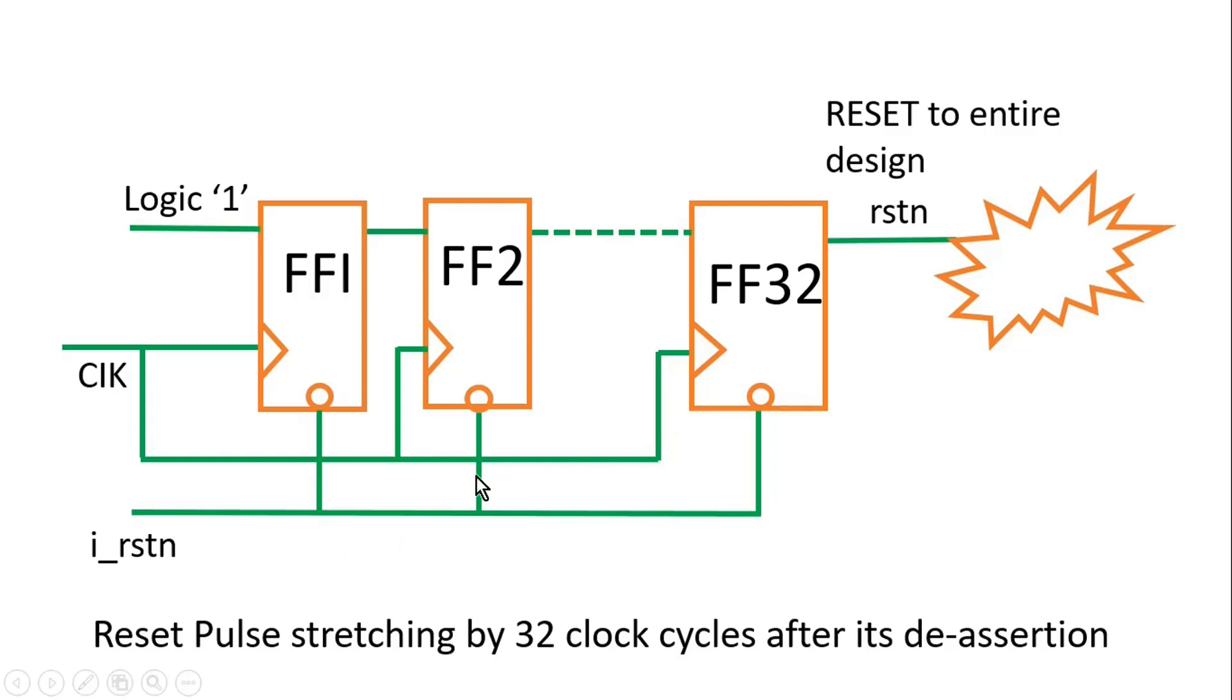Friends, the design of reset synchronizer which can stretch the input reset pulse by 32 clock cycles is shown on your screen. Here, as soon as the input reset pulse is applied, all the flip-flops go into a reset state and their output will become zero. So this zero will be applied to our main design which will lead to the reset of the entire design. But as soon as it is de-asserted, then this logic one at its input starts traveling towards the output of this reset synchronizer. And there are 32 flip-flops in the chain, so it will take 32 clock cycles to reach at the end of the chain—the last flip-flop, flip-flop 32—and then it gets applied to the main design. So that is how we are able to stretch the reset pulse after its de-assertion by 32 clock cycles.